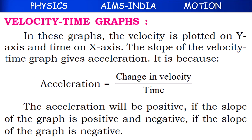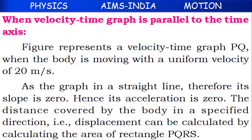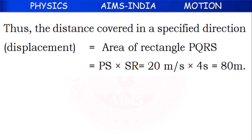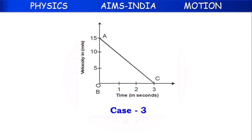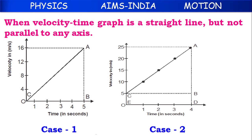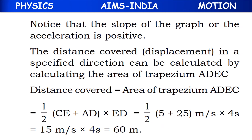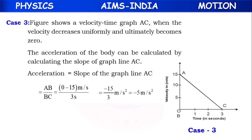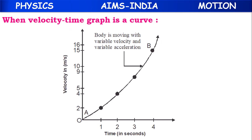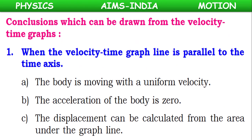After that, we studied velocity-time graphs — how to calculate slope and area when the graph is parallel to the time axis, when it is a straight line not parallel to the axis starting from the origin or from some other point, when velocity is decreasing, and when the velocity-time graph is a curve — along with conclusions.